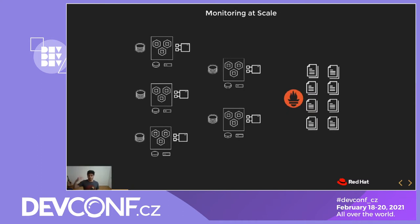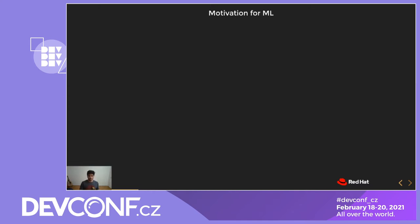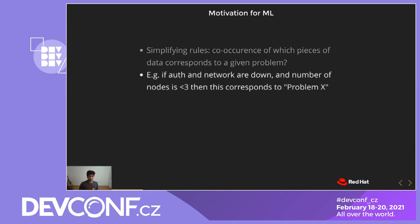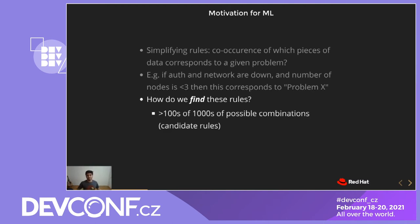It might not be feasible to go through each and every single piece of data to diagnose the situation. So how do you diagnose issues at scale? One idea we had was to simplify things by creating rules. For example, if you see these two or three things happening together, then that means the problem is a particular known issue. If you see that authentication and network are down and the number of nodes is less than three, then that condition refers to this particular known problem. These kinds of rules can help you simplify your debugging process exponentially. But the catch is how do you actually find these rules, because there are thousands of clusters and tens of metrics coming from each cluster, so there are at least hundreds of thousands of possible combinations.